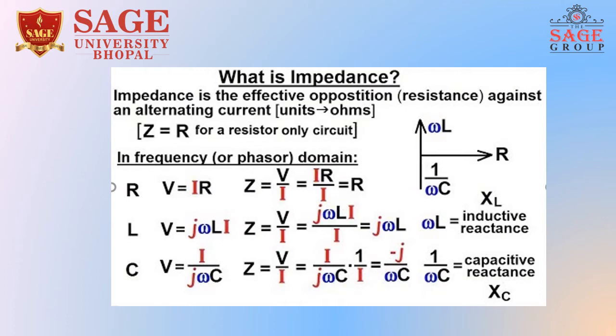What is impedance? Impedance is the effective opposition or resistance against an alternating current; its unit is Ohm, and it is denoted by Z. The formula related to the RLC circuit in the frequency domain: R gives V equals IR; for inductance, V equals j·ω·L·i; and for capacitance, V equals 1 upon j·ω·C. Here, ωL is the inductive reactance and 1/(ωC) is the capacitive reactance.